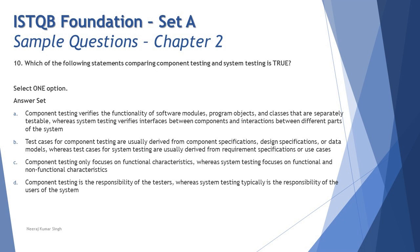Option A: component testing verifies the functionality of software modules, program objects, and classes that are separately testable, whereas system testing verifies interfaces between components and interaction between different parts of the system. The first part about component testing is correct, but the second part is wrong — it describes CIT and SIT (component integration testing and system integration testing), not system testing itself. So A is ruled out.